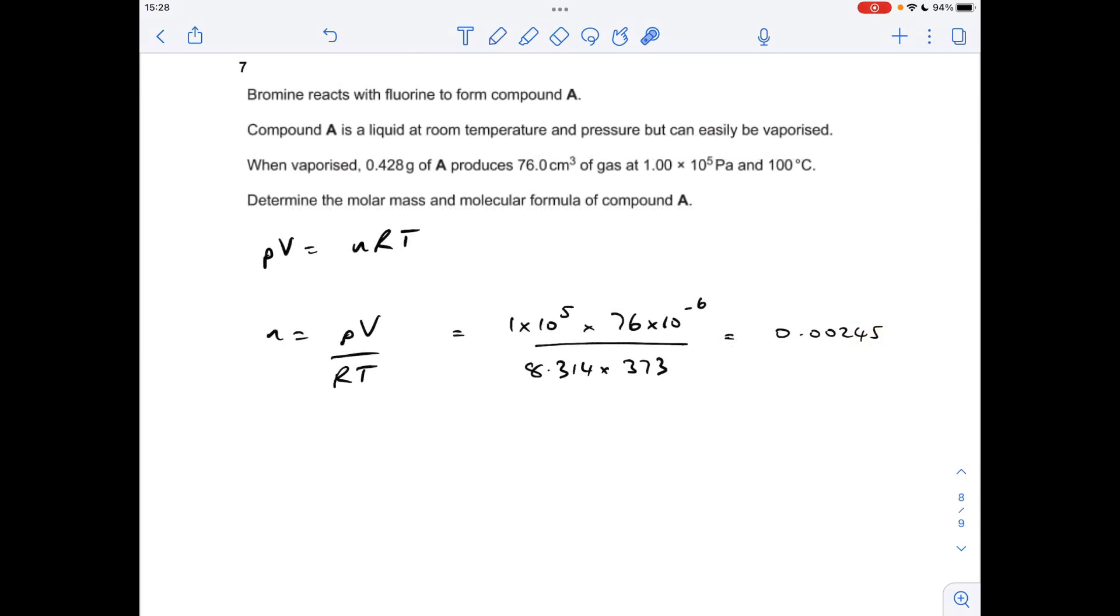So moving on to the final question. It's an ideal gas equation question to get the moles of compound A. Then we can work out its MR, and then we can work out how many bromines and fluorines must make up the compound.